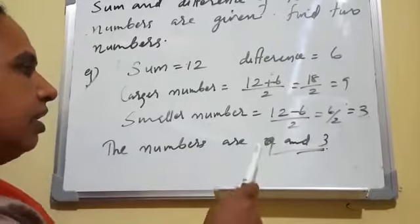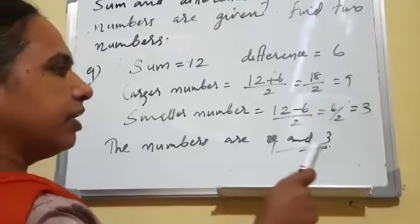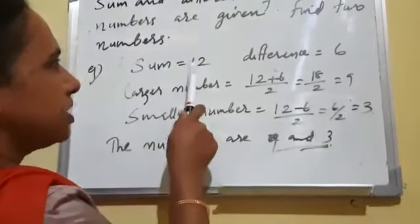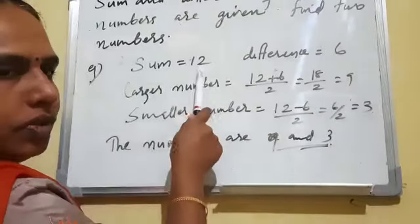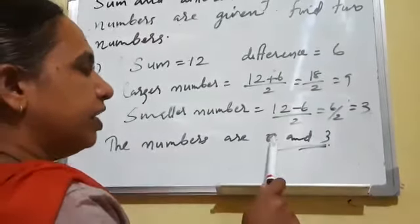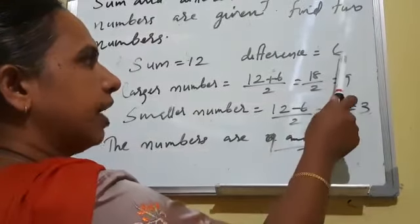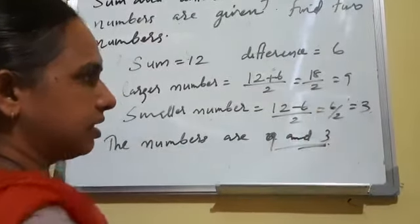You can check this: when you add 9 and 3, you get a sum equal to 12. When you find the difference between 9 and 3, you get the answer 6.